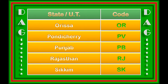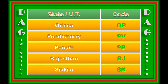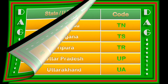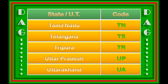Odisha: OR. Puducherry: PY. Punjab: PB. Rajasthan: RJ. Sikkim: SK. Tamil Nadu: TN. Telangana: TS.